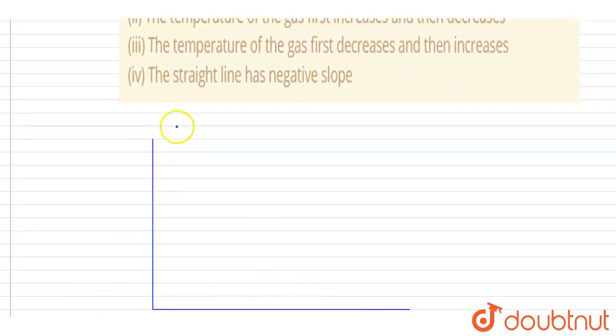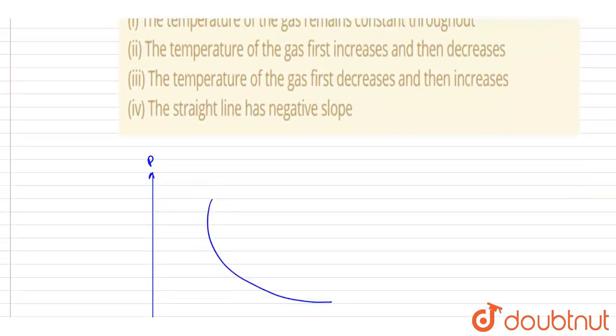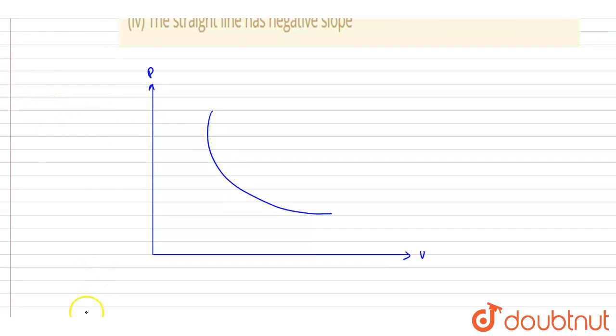So it must be falling on our isotherm because initial and final temperature are same. So if I draw an isotherm like this, the initial and final temperature are same, so it will be like this.